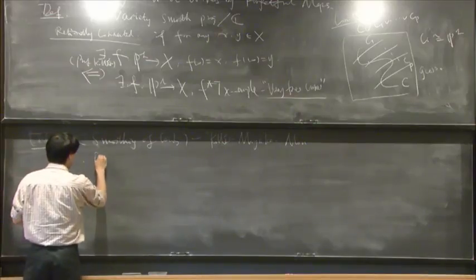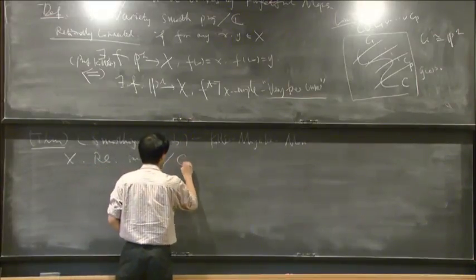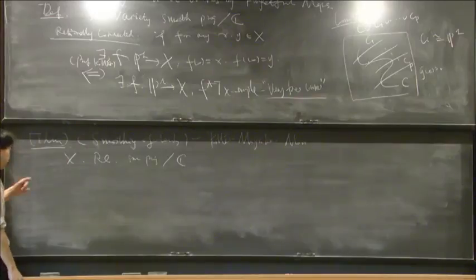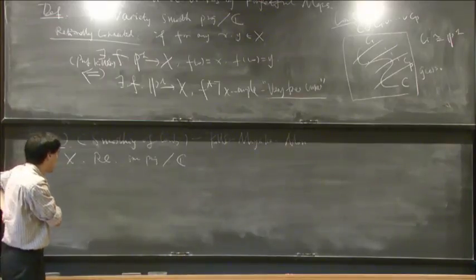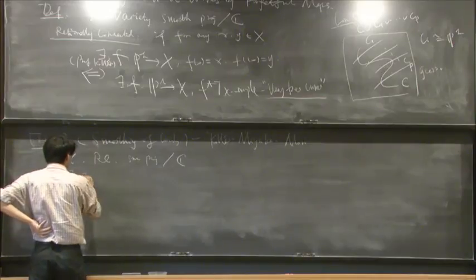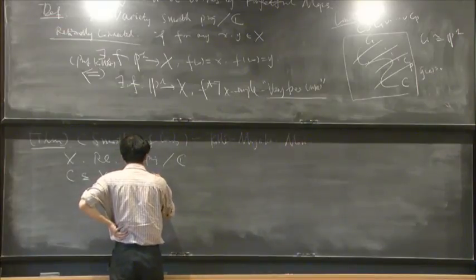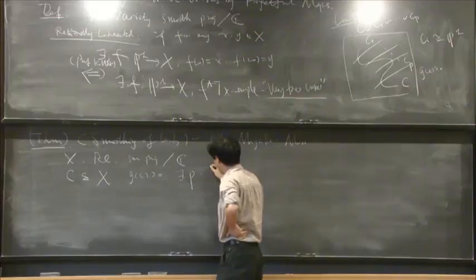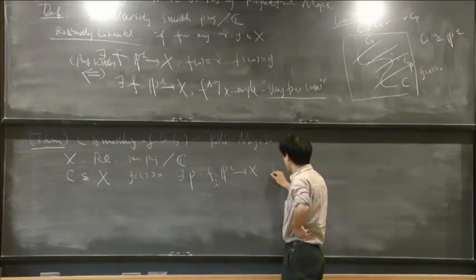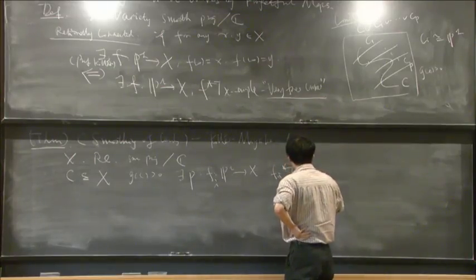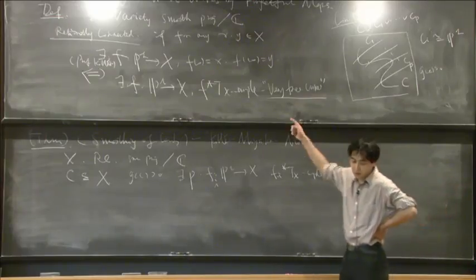The statement is: if X is rationally connected — restricting to the smooth projective case over the complex numbers (the general definition can be much wider) — let X be a rationally connected smooth projective variety over C, and let C belong to X be a high genus curve. Then there exist P maps from P¹ to X with the pullback of the tangent sheaf being ample, so these rational curves are all very free.